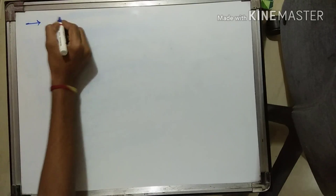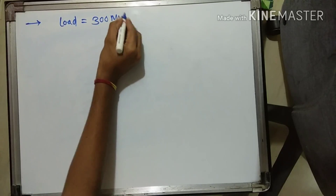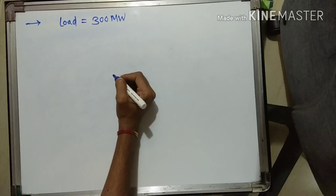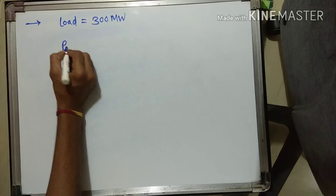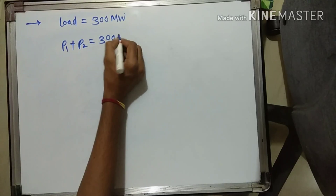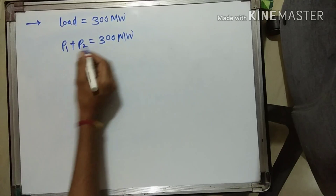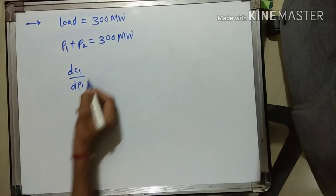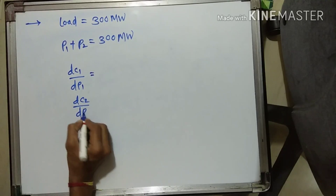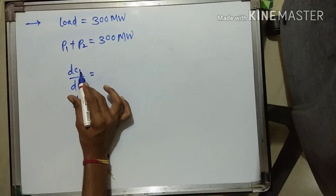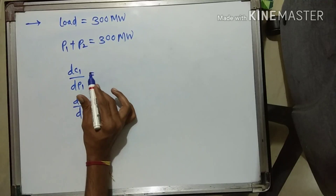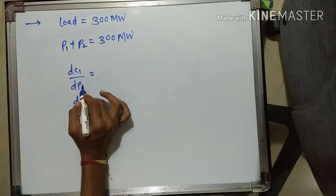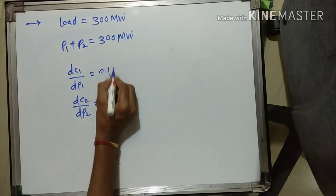The load is given as 300 megawatt, and transmission losses are not given, so this is a simple question. If transmission losses were given, we would use another method. So load = 300 MW, hence P1 + P2 = 300 megawatt, where P1 is power generated by generator 1 and P2 by generator 2. The incremental fuel costs DC1/DP1 = 0.1P1 + 20 and DC2/DP2 = 0.12P2 + 15 are given. Note: fuel cost is sometimes denoted by F in some books, so don't get confused.